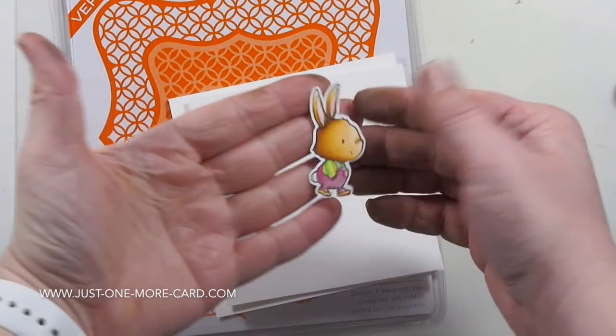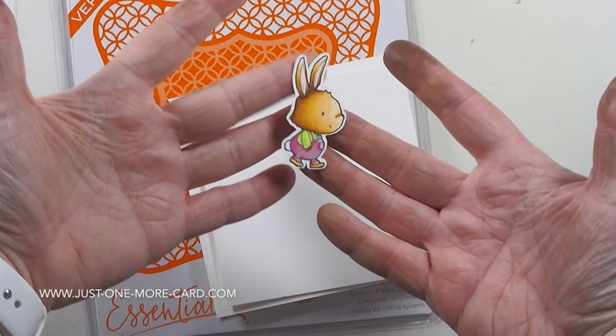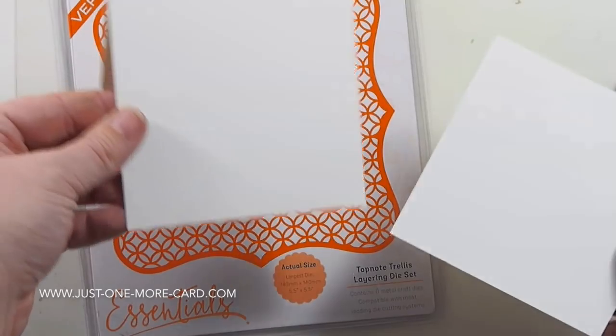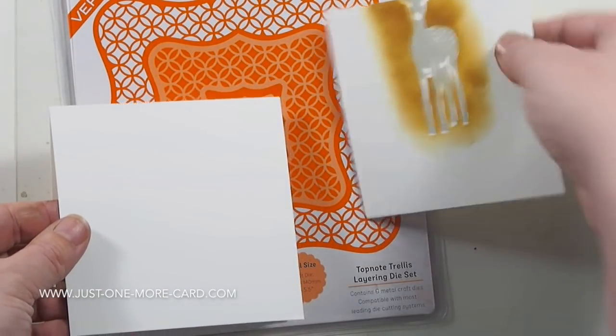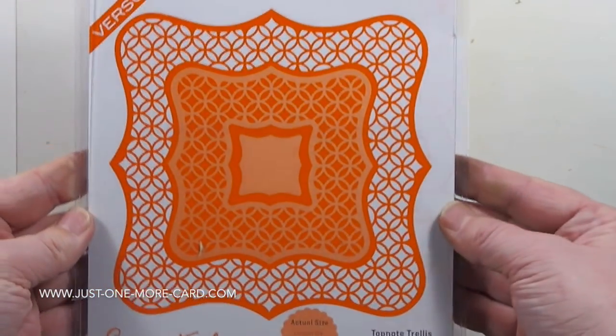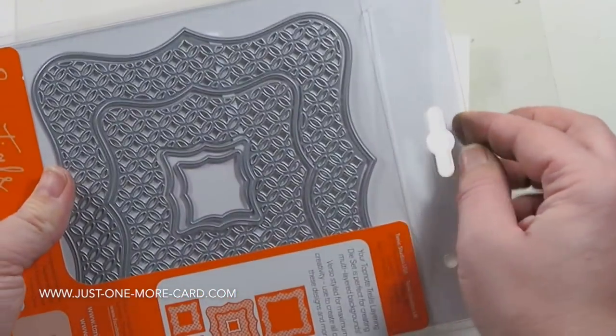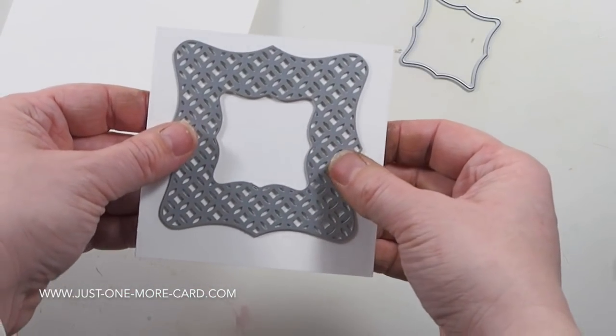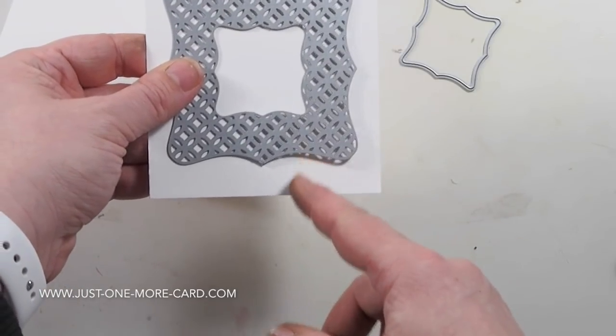So I'm starting out with this cute stamp from Purple Onion Designs that I've already colored. Please ignore my dirty fingers—I have a square card base here, and I used some glue on a previous project, which is why my fingers look all messed up. So please be kind and overlook this.